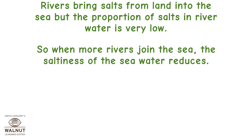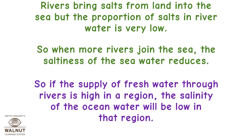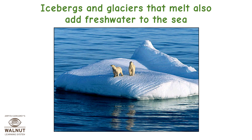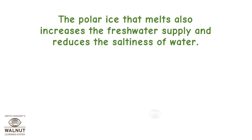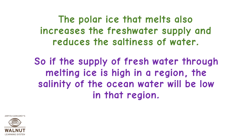When more rivers join the sea, the saltiness of the seawater reduces. So if the supply of fresh water through rivers is high in a region, the salinity of the ocean water will be low in that region. Icebergs and glaciers that melt also add fresh water to the sea. The polar ice that melts also increases the fresh water supply and reduces the saltiness of water — so if the supply of fresh water through melting ice is high in a region, the salinity of the ocean water will be low in that region.